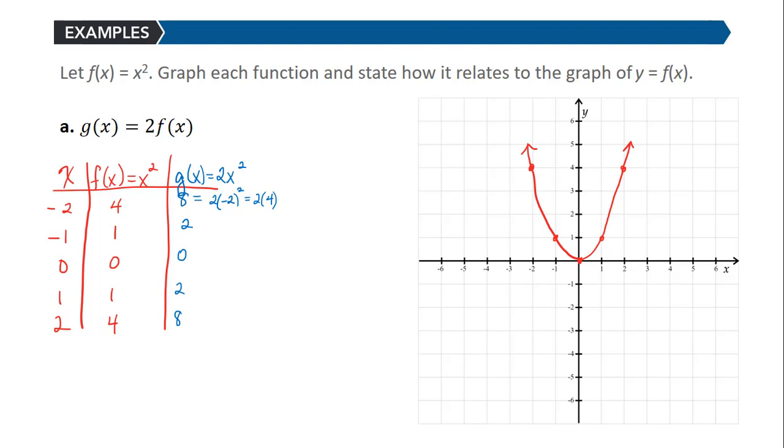So when I plot these points, I have negative 2, 8, negative 1, 2, 0, 0, 1, 2, and 2, 8. So notice that I still have a parabola. I'm going to draw the graph through these points. But now I have distorted that parabola. In fact, I've stretched it upwards.